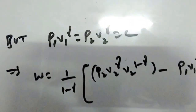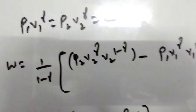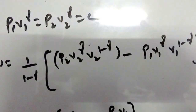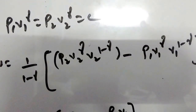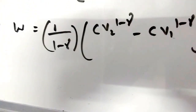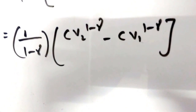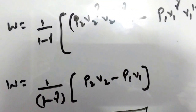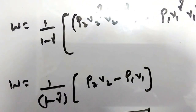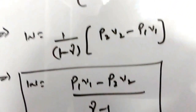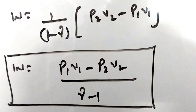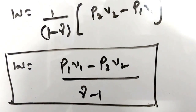Since P1·V1^γ = P2·V2^γ = C, we substitute C = P2·V2^γ and C = P1·V1^γ into the equation. Finally, we get W = 1 / (1 − γ) × (P2·V2 − P1·V1), which can be rewritten as W = (P1·V1 − P2·V2) / (γ − 1). This is the work done for an adiabatic process in a non-flow system.